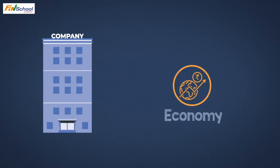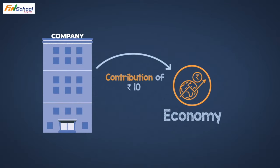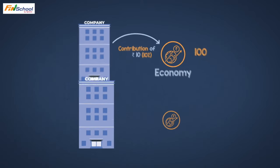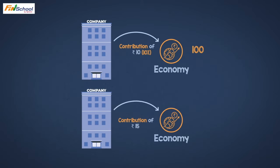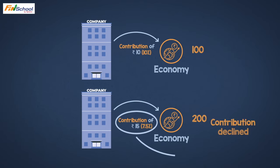And if it is lower, over time the company's size can become smaller because the economy is growing at a larger rate. For example, if your company was contributing Rs. 10 to the economy when the economy's size was 100, the company's contribution was 10%. Now if the company's earnings grow to Rs. 15 and the economy's size becomes 200, the company's share in the economy becomes 7.5% — meaning the company's contribution has declined.